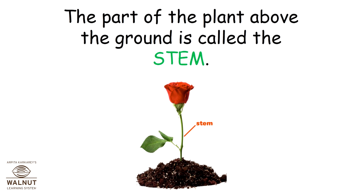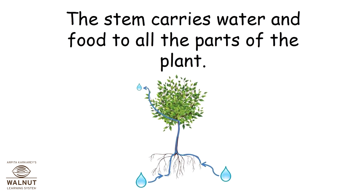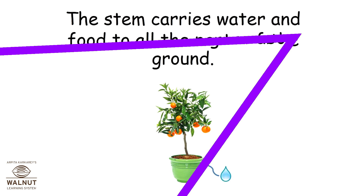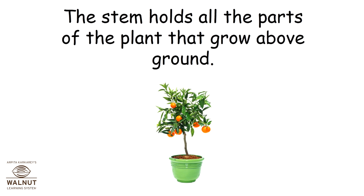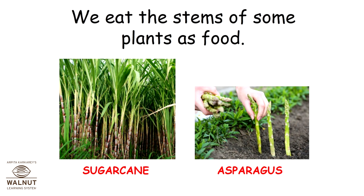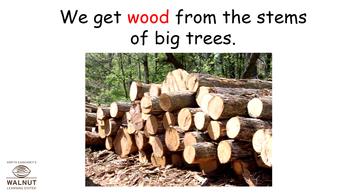The part of the plant above the ground is called the stem. The stem carries water and food to all the parts of the plant. The stem holds all the parts of the plant that grow above the ground. We eat the stems of some plants as food. We get wood from the stems of big trees.